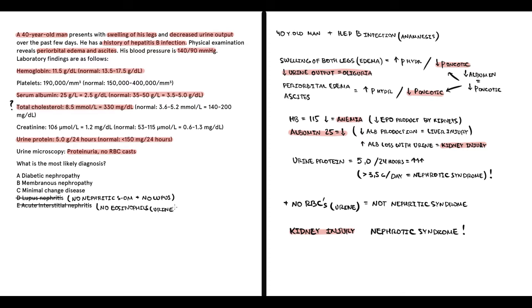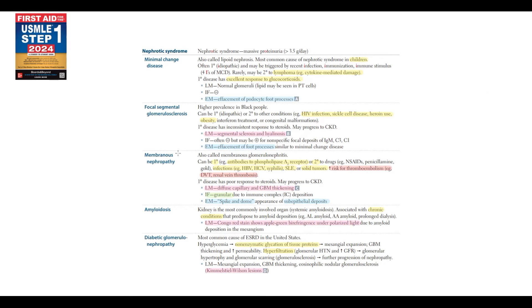We are left with three subtypes of glomerulonephritis which are characterized by nephrotic syndrome. And at this point, in this type of tests, anamnesis always plays a crucial role. First of all, we have to mention that lupus can also cause nephrotic syndrome because lupus is associated with membranous nephropathy. But in this case there is no lupus.